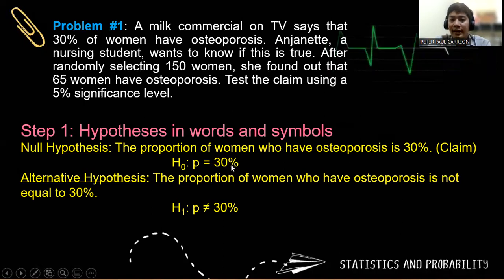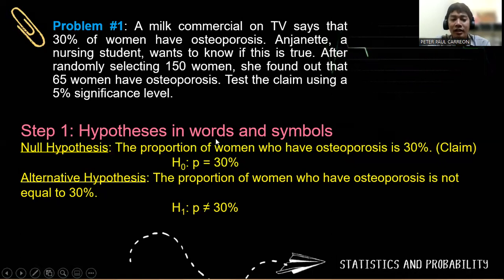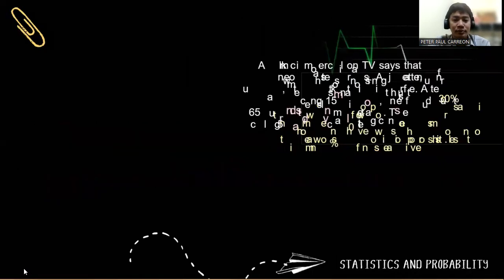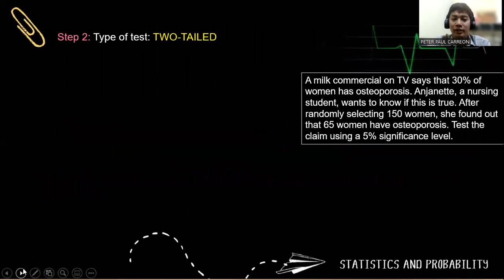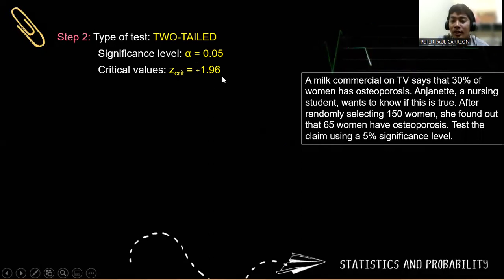For the alternative hypothesis, since we are not interested about the direction, the proportion of women who have osteoporosis is not equal to 30%. So H sub 1 is P is not equal to 0.3. For step two, we determine the type of test — that is a two-tailed test. Our significance level is 0.05, and the corresponding critical values are positive/negative 1.96, which we will compare to the computed value.